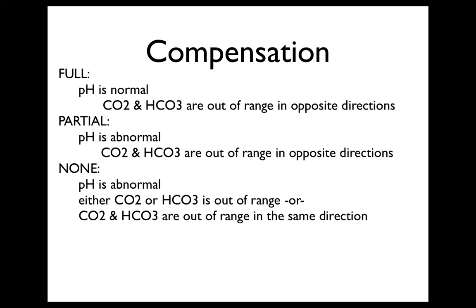When discussing compensation, full compensation means that the pH is within normal values, so 7.35 to 7.45. It also means that the CO2 and the bicarb are out of range in opposite directions — one will be high, one will be low. Partial compensation means the pH is abnormal, so less than 7.35 or greater than 7.45, and that the carbon dioxide and bicarb are out of range in opposite directions.